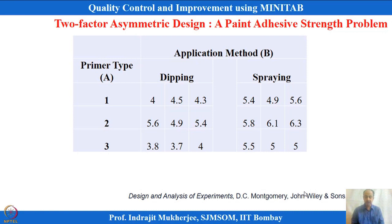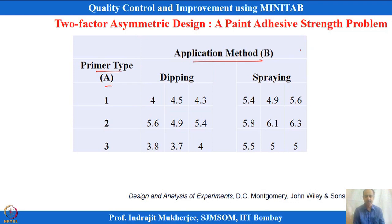The experiment is a combination of two factors: primer type, which is Factor A, and application method, which is Factor B. Earlier we dealt with one factor at different levels — that is one-way analysis of variance. Now this is two-way analysis of variance, because there are two factors: primer type and application method.